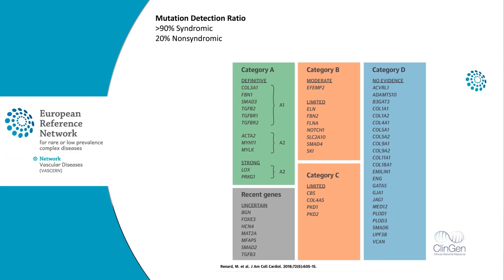To guide the selection of genes for these panels, a recent publication provides a list of curated genes with a proven gene-disease association. It presents a list of category A genes that should be included in these panels, along with a list of more recently identified genes that should at least be included in research laboratories.